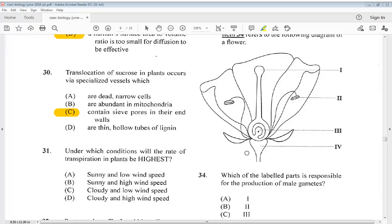Question 31 says, under which conditions will the rate of transpiration in plants be highest? A. Sunny and low wind speed. B. Sunny and high wind speed. C. Cloudy and low wind speed. D. Cloudy and high wind speed. So the answer would be B, sunny and high wind speed.